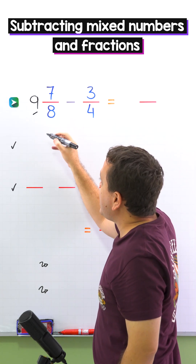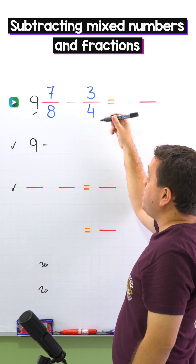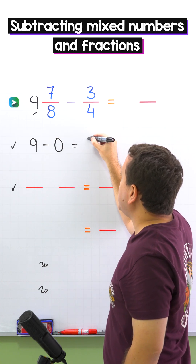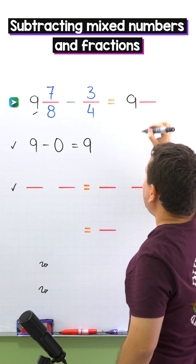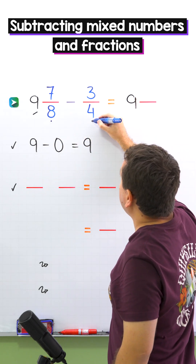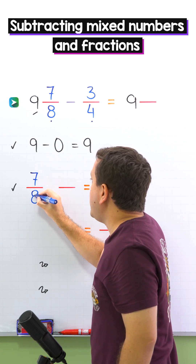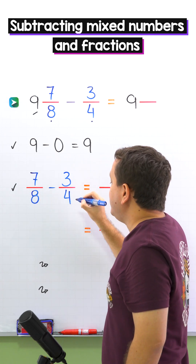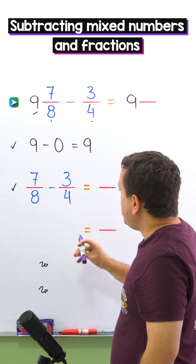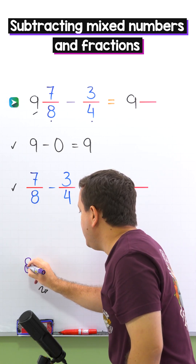In this example the whole number is nine, so we put nine minus, and here we have no whole numbers — we only have the fraction three fourths. We can put zero, and nine minus zero gives us nine. We put nine in the answer. Now we are going to subtract the fractions: seven eighths and three fourths. We put seven eighths minus three fourths. Since these two fractions have different denominators we need the least common denominator.